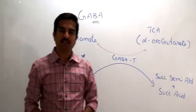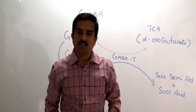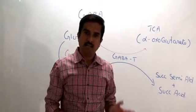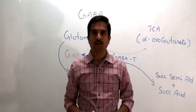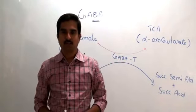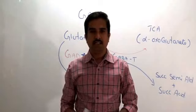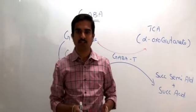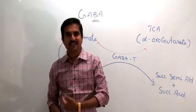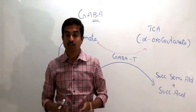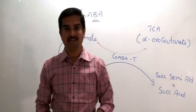GABA is an inhibitory neurotransmitter. Both GABA and glycine in the CNS have the capability of hyperpolarizing neurons, decreasing membrane excitability. Meanwhile, glutamate and aspartate are excitatory neurotransmitters responsible for the depolarization of neurons.